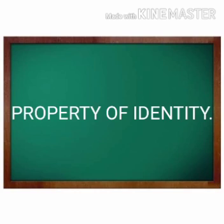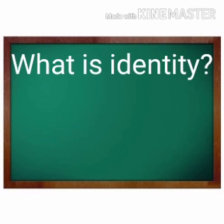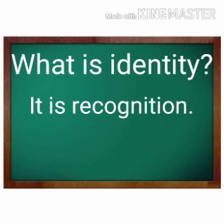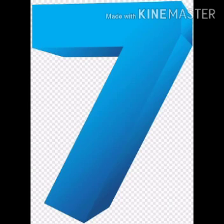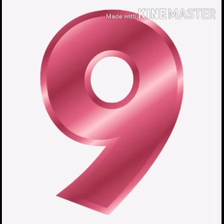Next, we are going to learn the property of identity. What is identity? It is recognition. For example, we recognize our friends, we recognize heroes. We know Amitabh Bachchan, we know his identity. Take this number 7. If I ask you what number is this, you will say it is 7 and not 9. So every number has its identity.